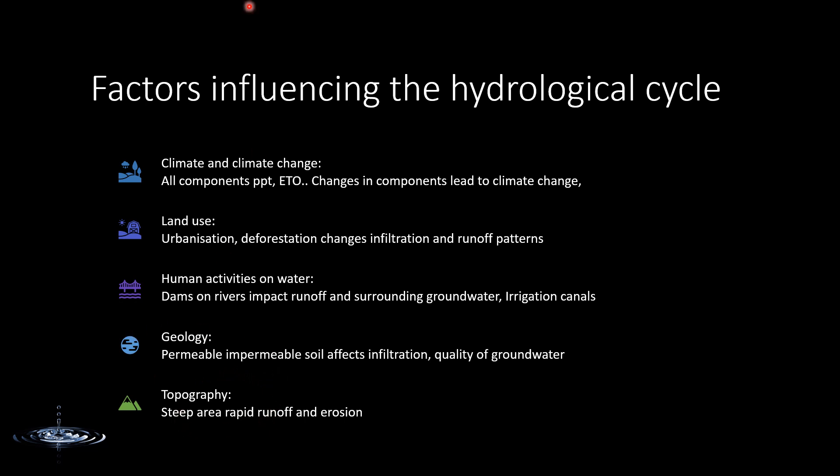The last factor is topography. The shape and elevation of the land surface can affect the hydrological cycle by influencing water movement. A steep slope can lead to rapid runoff, and when the velocity of water is high, it can lead to erosion. In flat areas, the velocity of water is less, erosion is less, and the slower movement promotes infiltration and groundwater recharge.